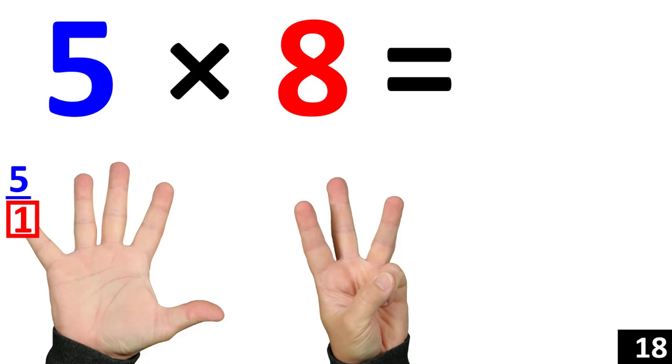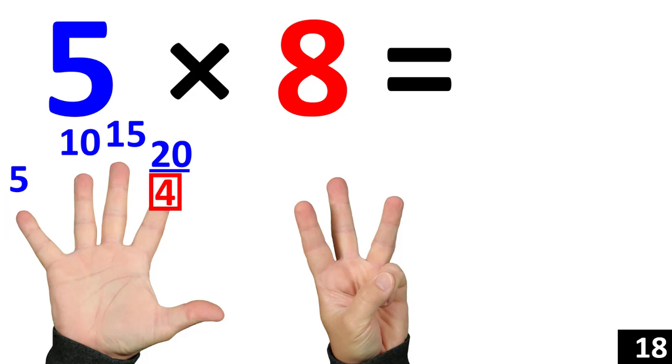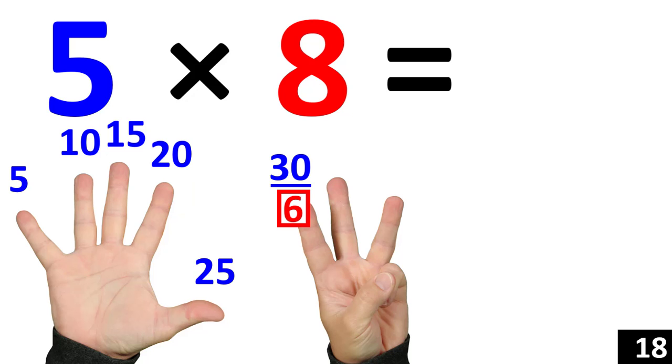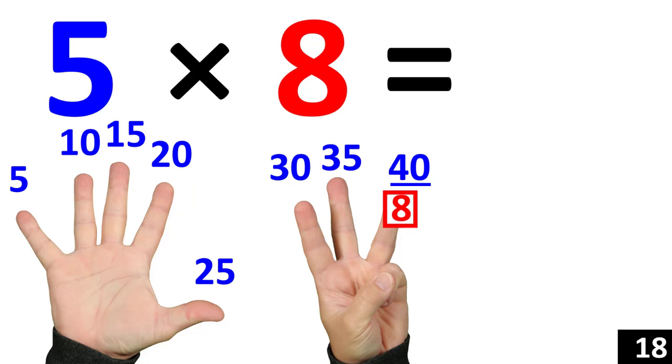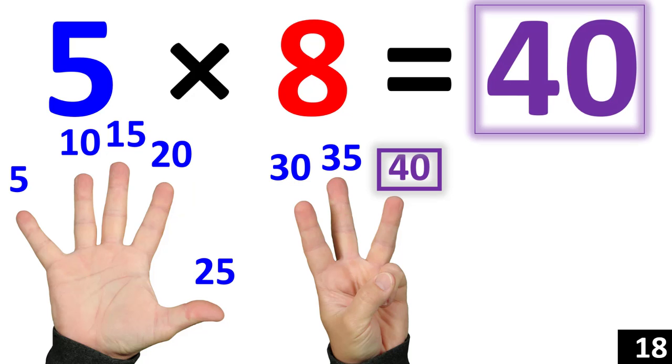5 times 8 is the same thing as counting by 5 eight times. 5. 10. 15. 20. 25. 30. 35. 40. 5 times 8 is equal to 40.